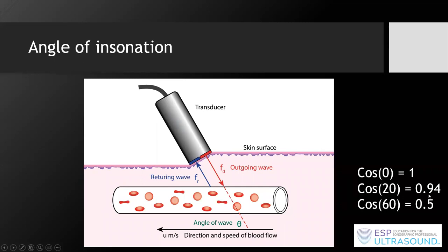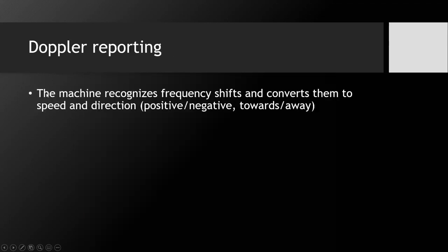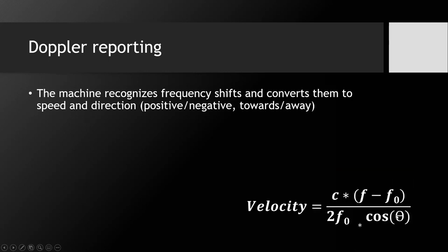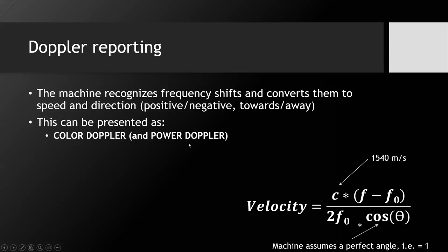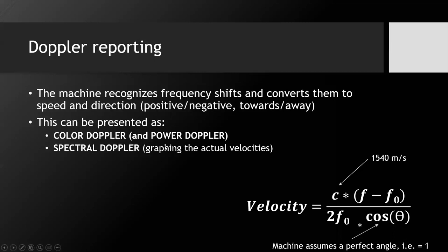Because you never know exactly what your angle is, you can't truly correct it at the back end. Doppler reporting is where the machine recognizes frequency shifts, converts them to speed and direction, and shows that to you. The machine assumes the cosine is 1 and that the speed of ultrasound through soft tissue is 1540 meters per second. It presents this as color — figuring out red or blue, where it's coming from and how dense — or as spectral Doppler which graphs the velocities. We've previously spoken about pulse wave Doppler, but today we're talking about continuous wave Doppler.